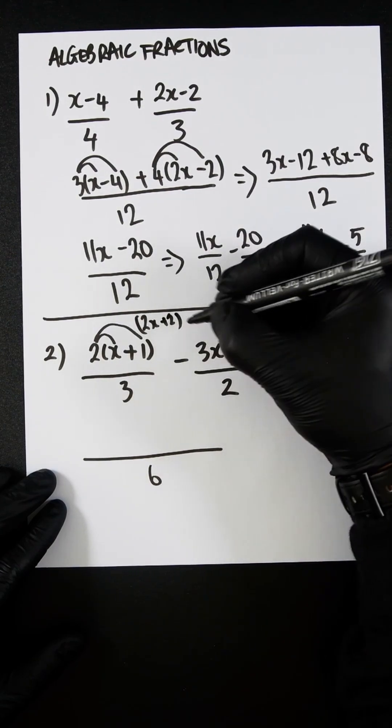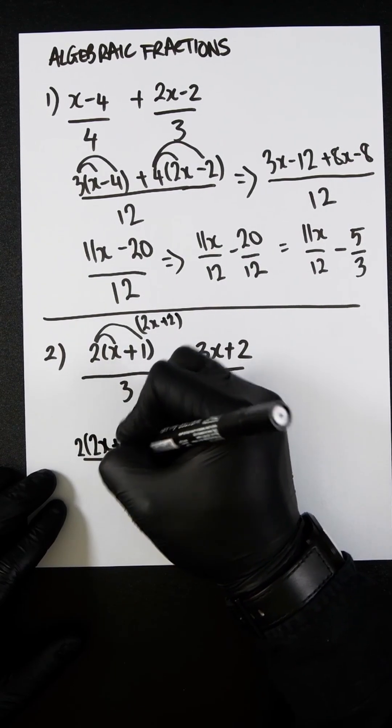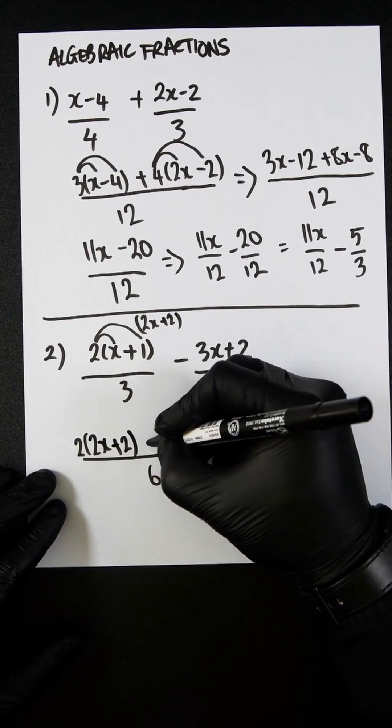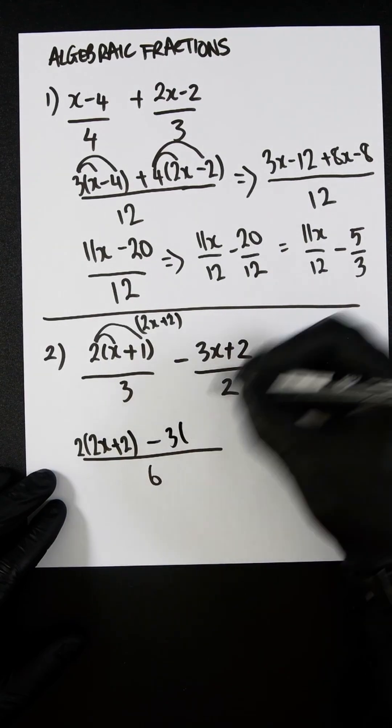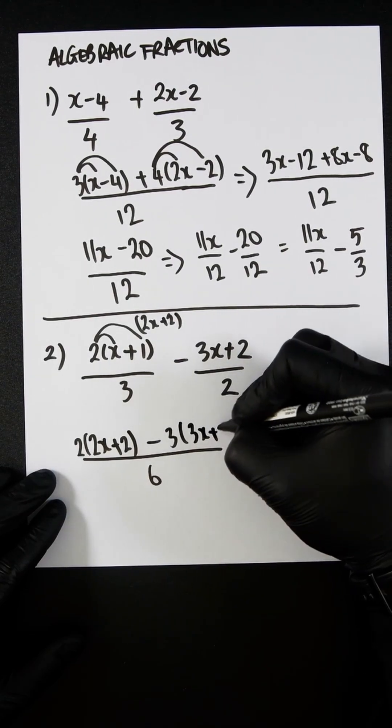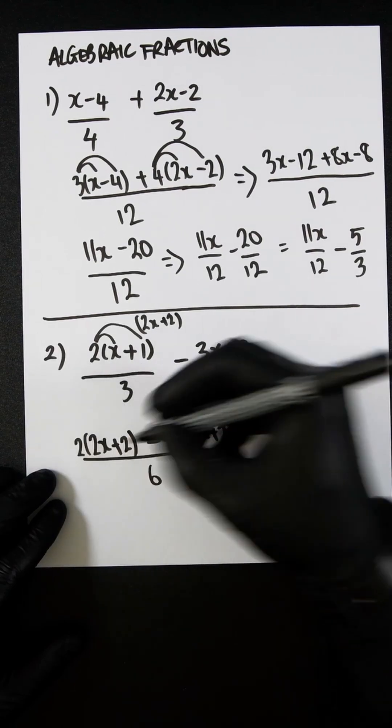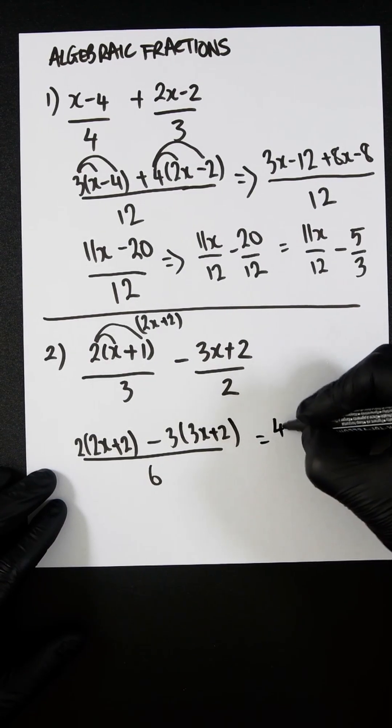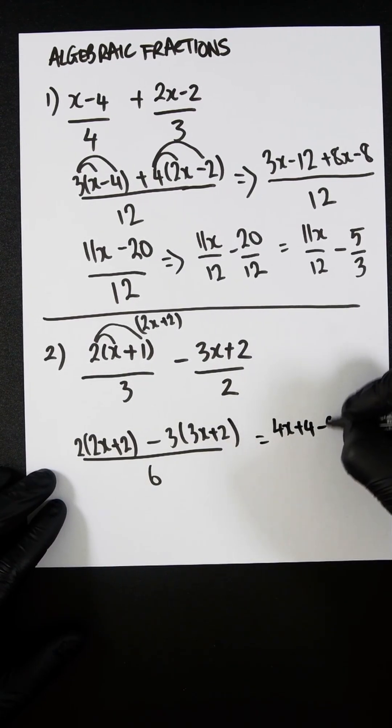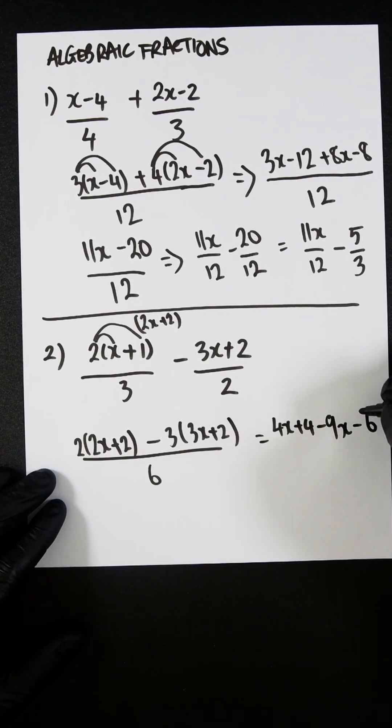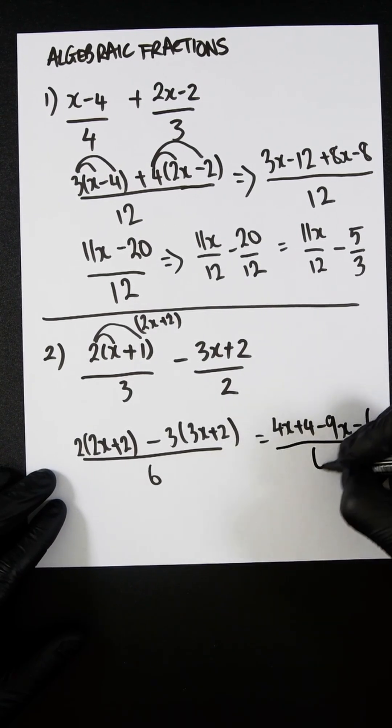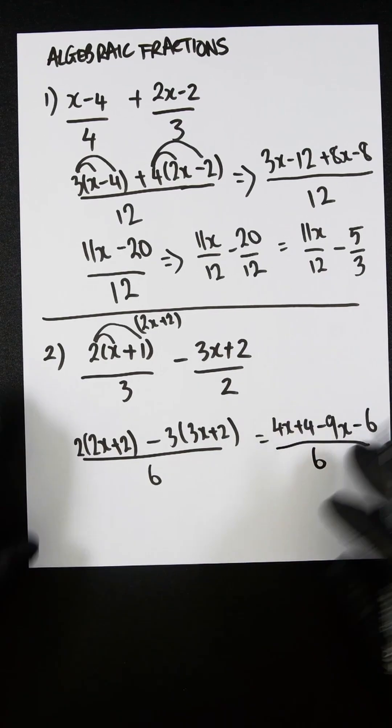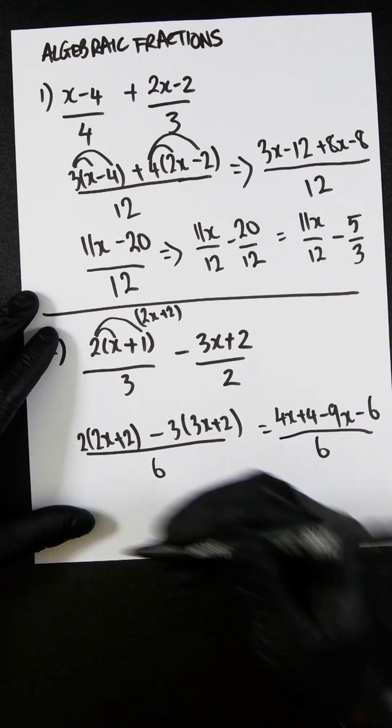And then when this is applied to that, it's easier to do. So we're going to get 2 times (2x plus 2) minus 3 times (3x plus 2). Let's expand this top. So you're going to get 4x plus 4 minus 9x minus 6, all divided by 6.